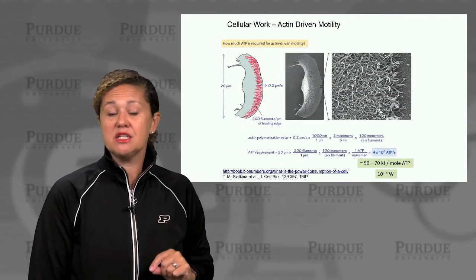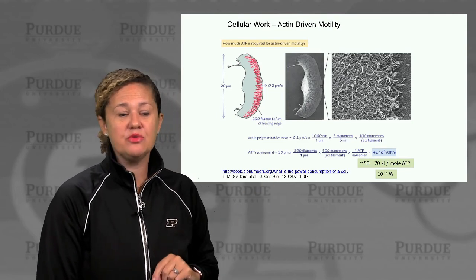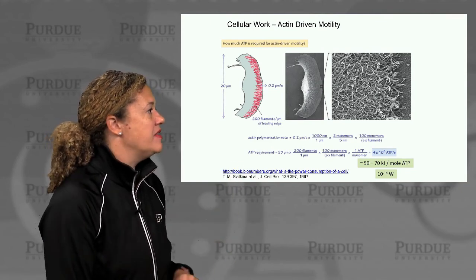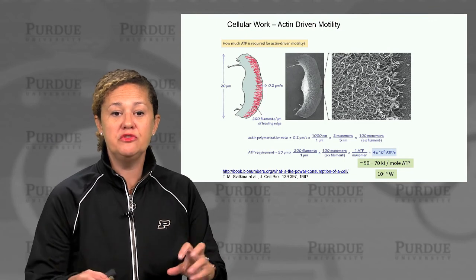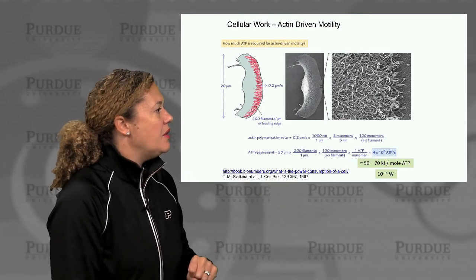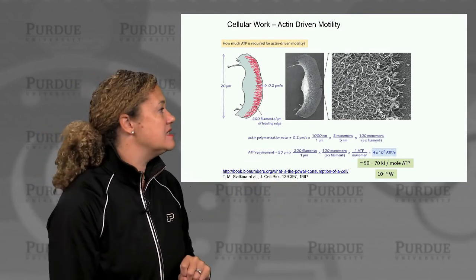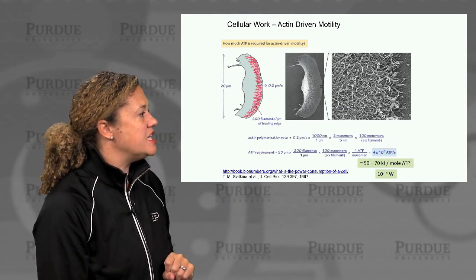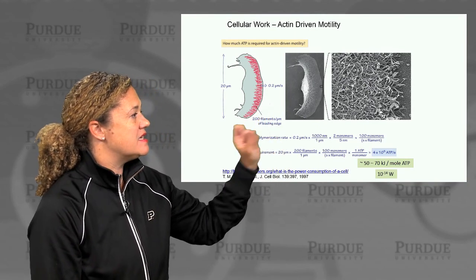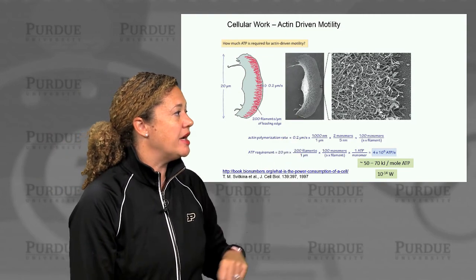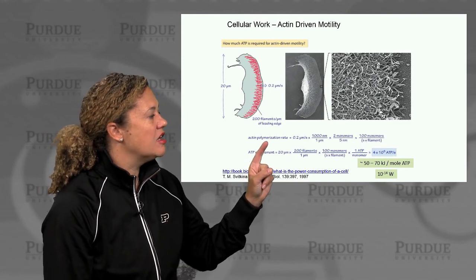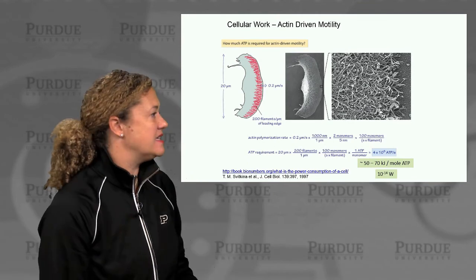Let's look at some calculations for actin-driven motility to give us a ballpark. Here's an example of a cell using actin-driven movement by assembling actin filaments, protruding them out, and dragging the cell along. Some measurements have been made: the cell was measured to move about 0.2 microns, or 200 nanometers per second, and there are about 200 actin filaments per micron at this leading edge.